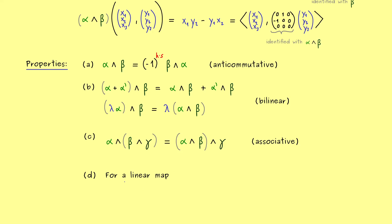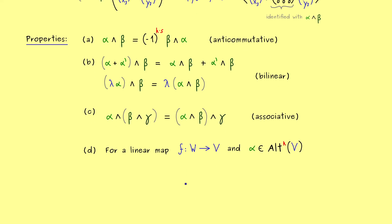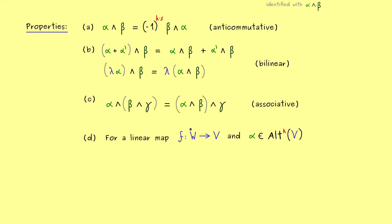So you see, we have already reached the last property now, but for that I first need a definition. Here I need two vector spaces W and V and a linear map between them. And now it turns out that every alternating k-form on V can be put back to W. This means, with the help of f, we can define a new alternating k-form on W.